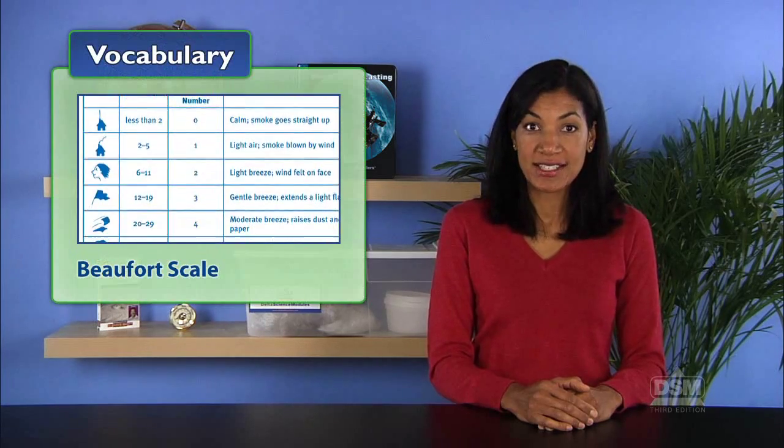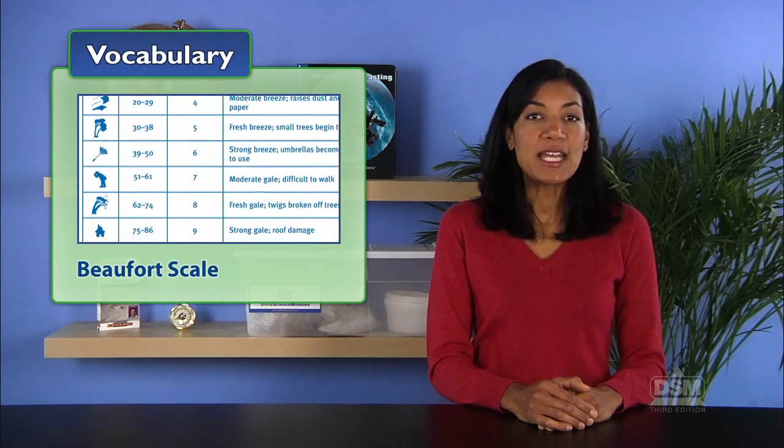Distribute a copy of Activity Sheet 3 to each student. Point out the Beaufort Scale on their Activity Sheet. Explain that they can infer the speed of the wind by comparing the conditions they see with the descriptions on the Beaufort Scale.